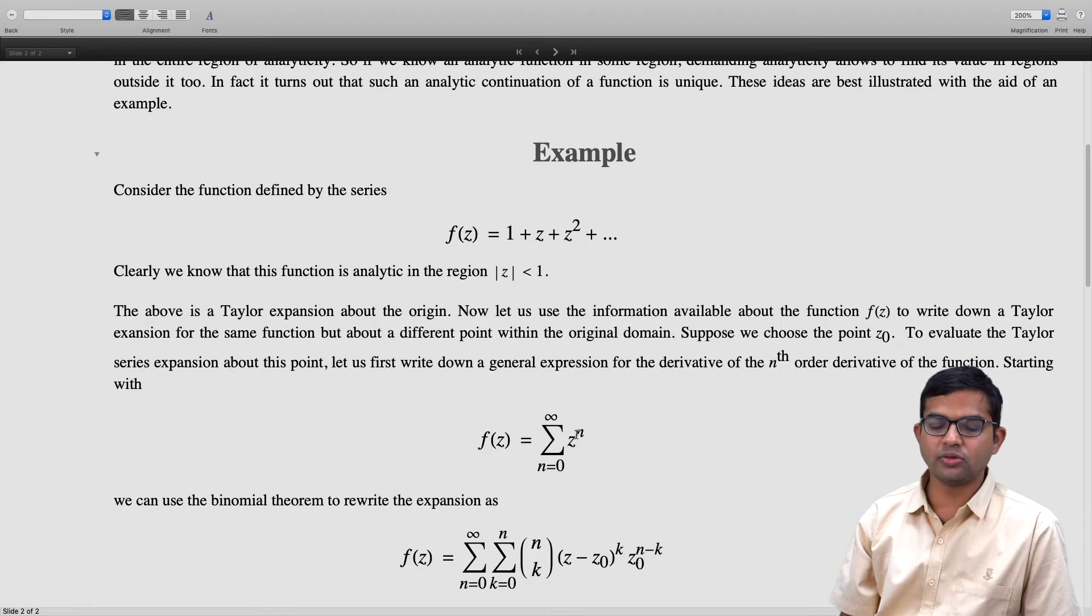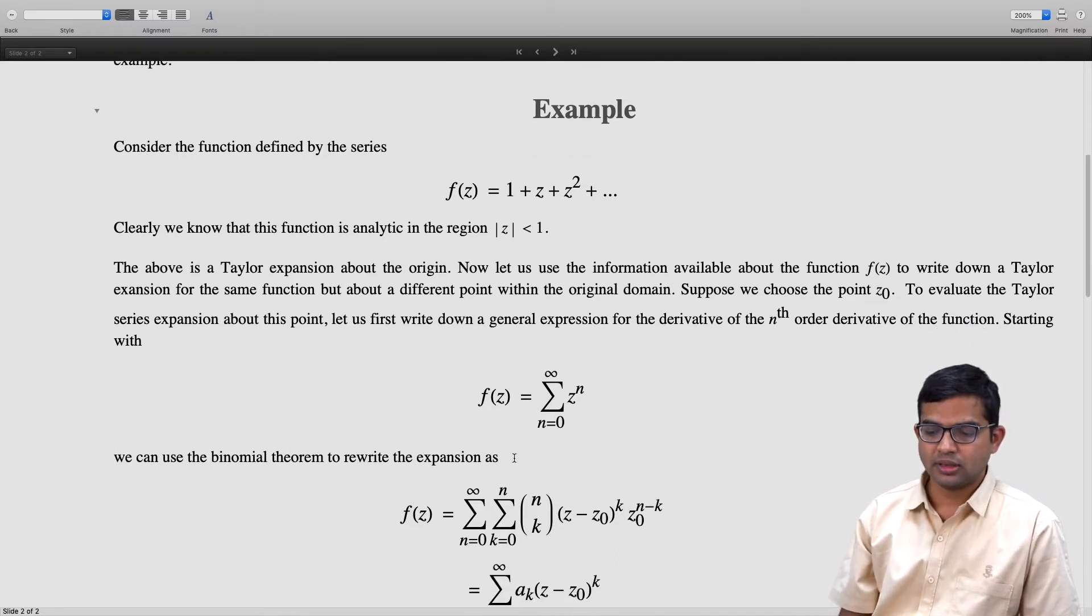Now, if you look at this, it looks like summation over k going from 0 to infinity of aₖ times (z - z₀)^k.